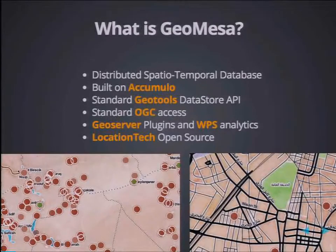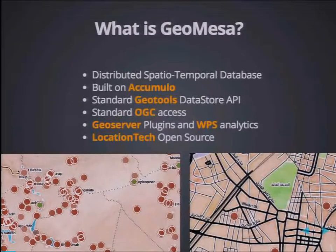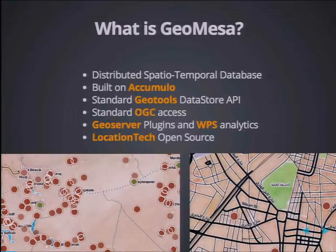GeoMesa is LocationTech open-source. Some of the visualizations you're seeing here are associated with the GDELT dataset. GDELT is the Global Database of Events, Language, and Tone, put out by UPenn and UT Austin. It's 250 million geocoded events since 1979, about 100 gigs of uncompressed data. Just to give some performance numbers, we can ingest that data into the system on a small virtualized cloud in approximately 15 minutes, and then we can do analytics against them.